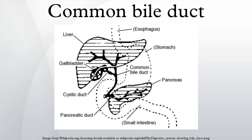Several problems can arise within the common bile duct. If clogged by a gallstone, a condition called choledocholithiasis can result. In this clogged state, the duct is especially vulnerable to an infection called ascending cholangitis. Very rare deformities of the common bile duct are cystic dilations, choledococeles, and biliary atresia.